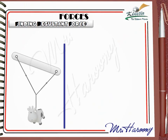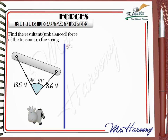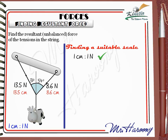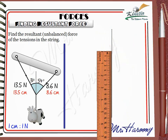A third example shows a small toy that is hung as shown. This causes unequal tensions in the two strings. The angle between the vertical line and each of the two forces are 54 degrees and 31 degrees. The magnitude of the two tension forces are 8.6 N and 13.5 N. Find the resultant unbalanced force. Since the force values are small, we can use the simplest scale of 1 cm to 1 N. Neither force is vertical nor horizontal, so we draw a vertical dotted line as our reference.